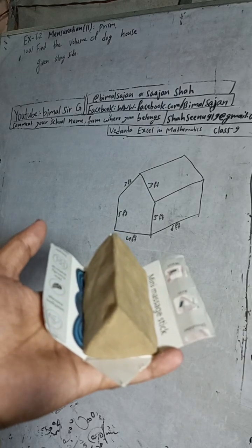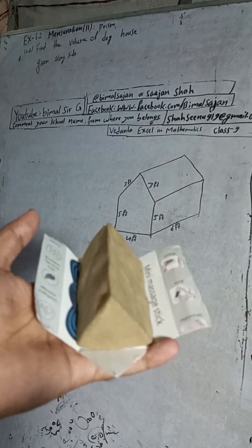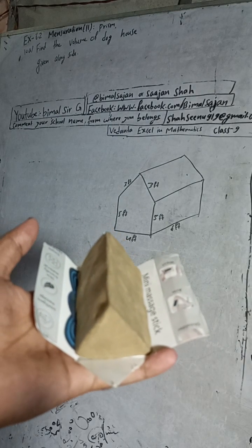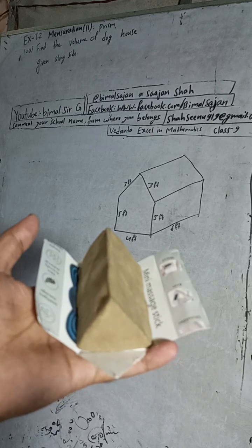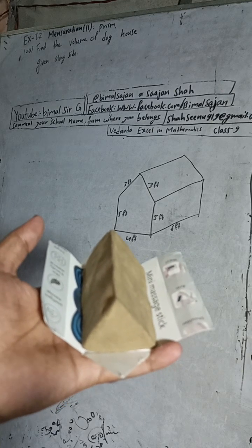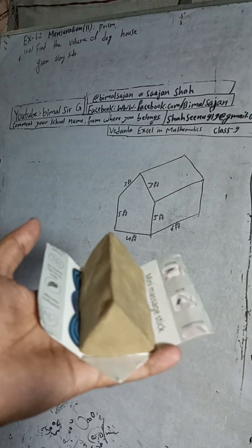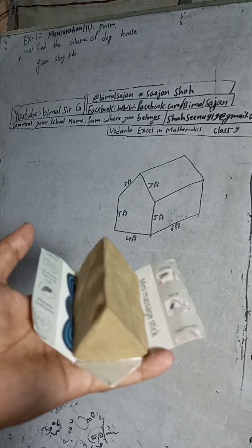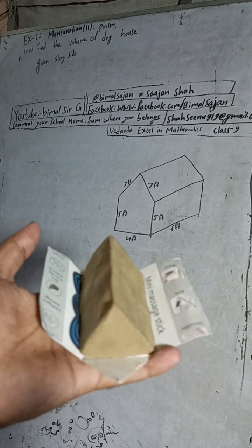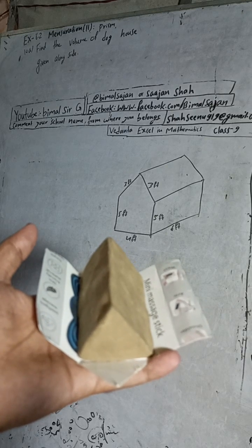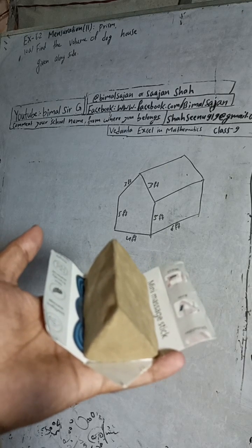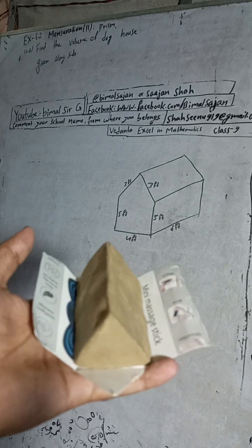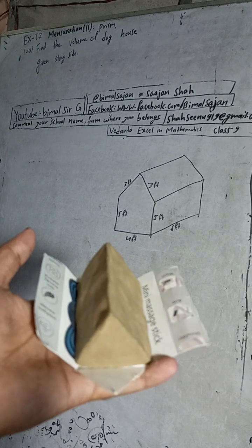Hi class 9 and 10 students, welcome back to Vimalsarji YouTube channel. This is question number 10a, exercise 6.2, mensuration second part — prism. Vedanth Excel in Mathematics class 9. The question is: find the volume of the dog house given alongside.